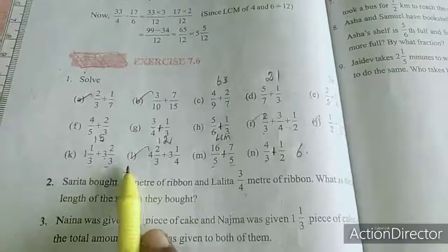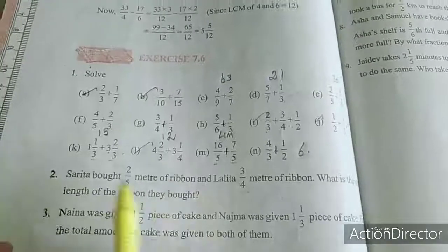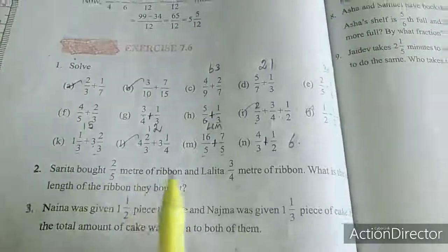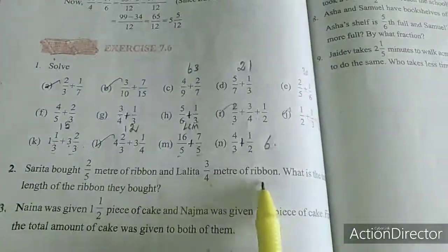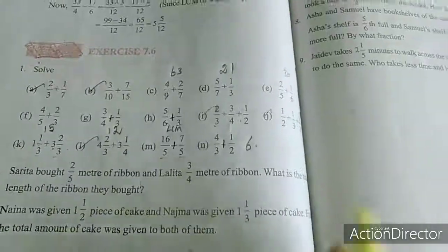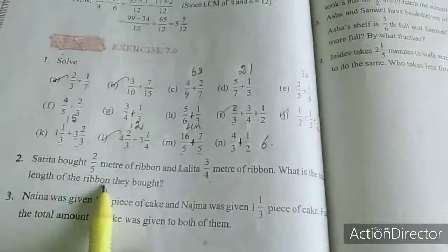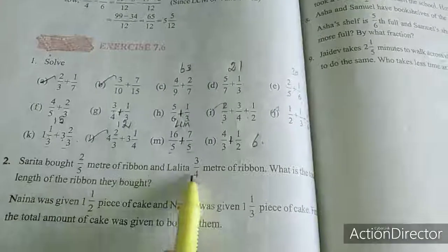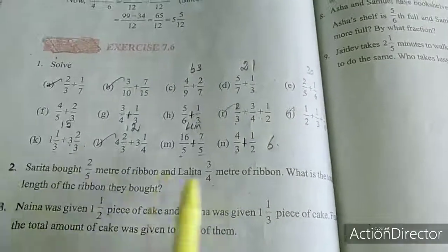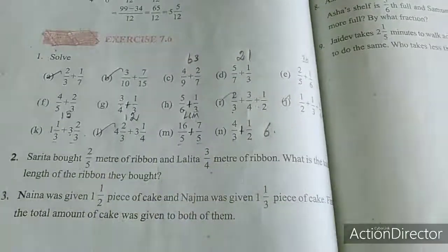See here, second sum. Saritha bought 2 by 5 meter of ribbon, Lalitha 3 by 4 meter of ribbon. What is the total length of ribbon they bought? Same thing, total length of ribbon, add them. So now we will work out.